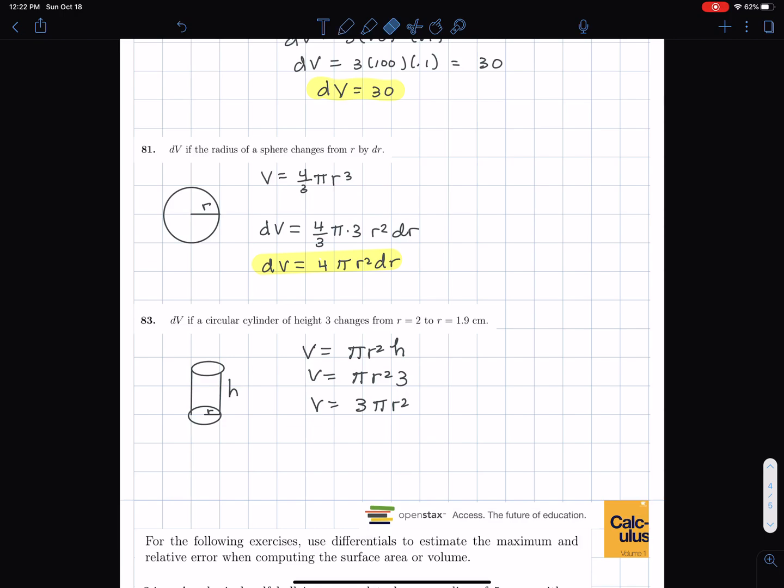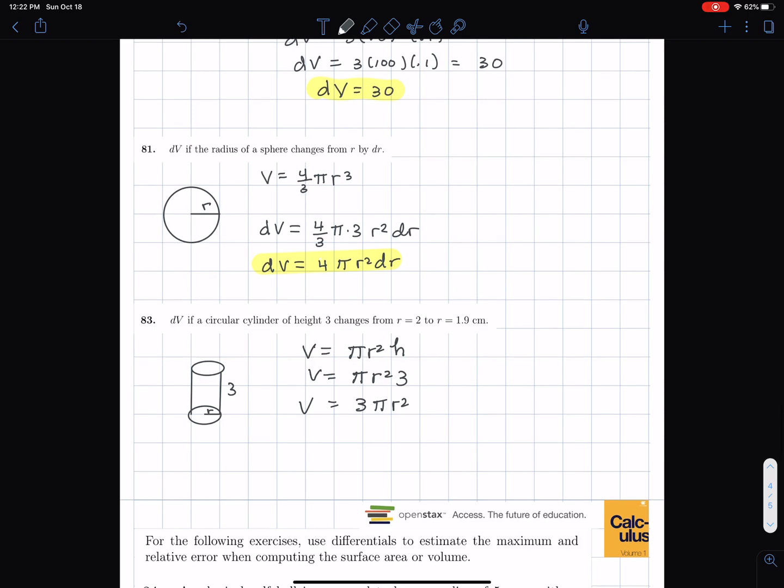So that's the volume of this cylinder, this circular cylinder. I'm going to replace h by just writing 3 here. Then we find the differential. So it's dv equals the derivative of 3 pi r squared, which is 6 pi r dr. So that's our differential.